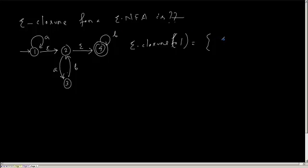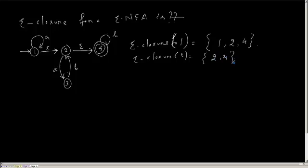What will epsilon closure of 1 be? Similarly, what will epsilon closure of 2 be? Epsilon closure tells me what are the set of states I can reach from a given state through empty transitions.